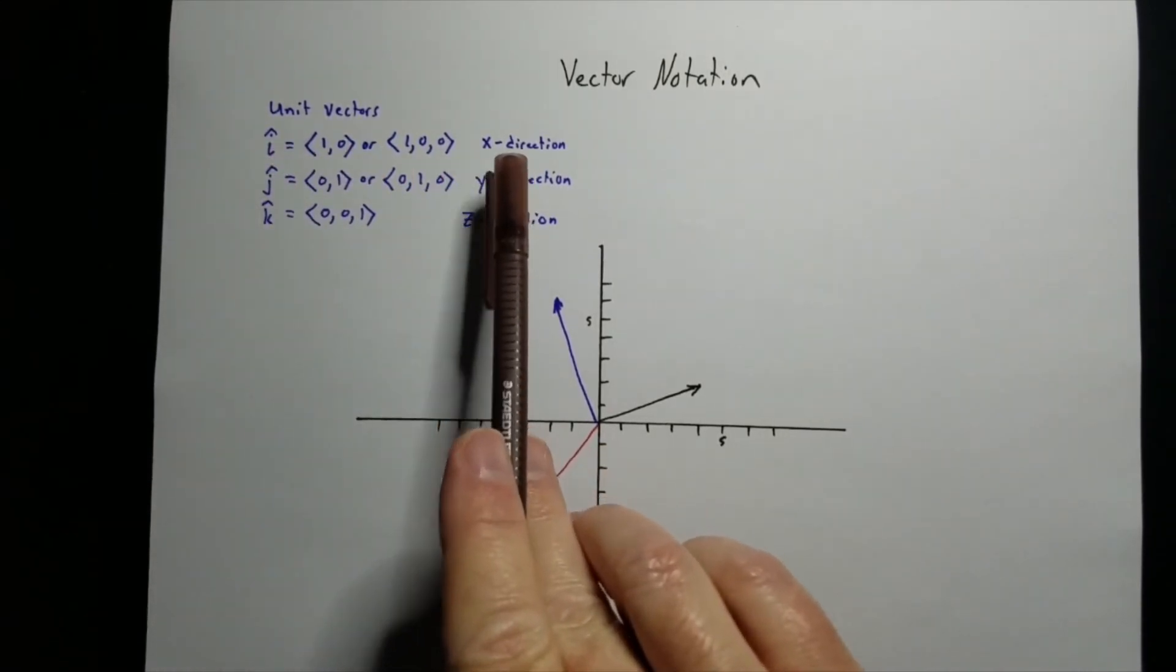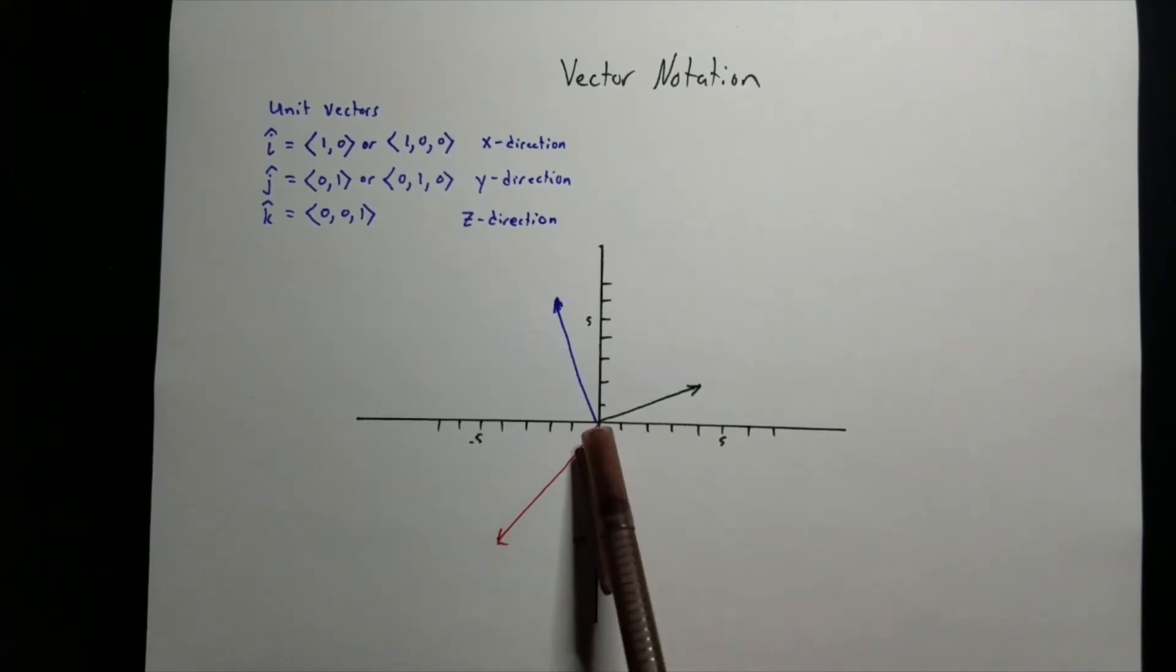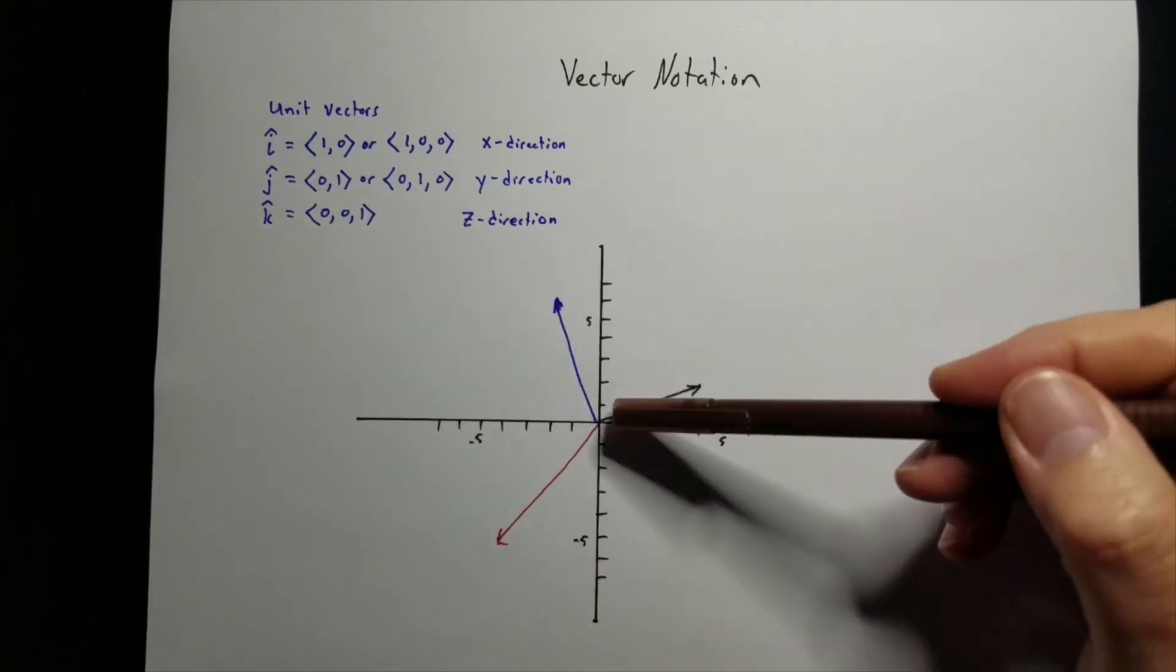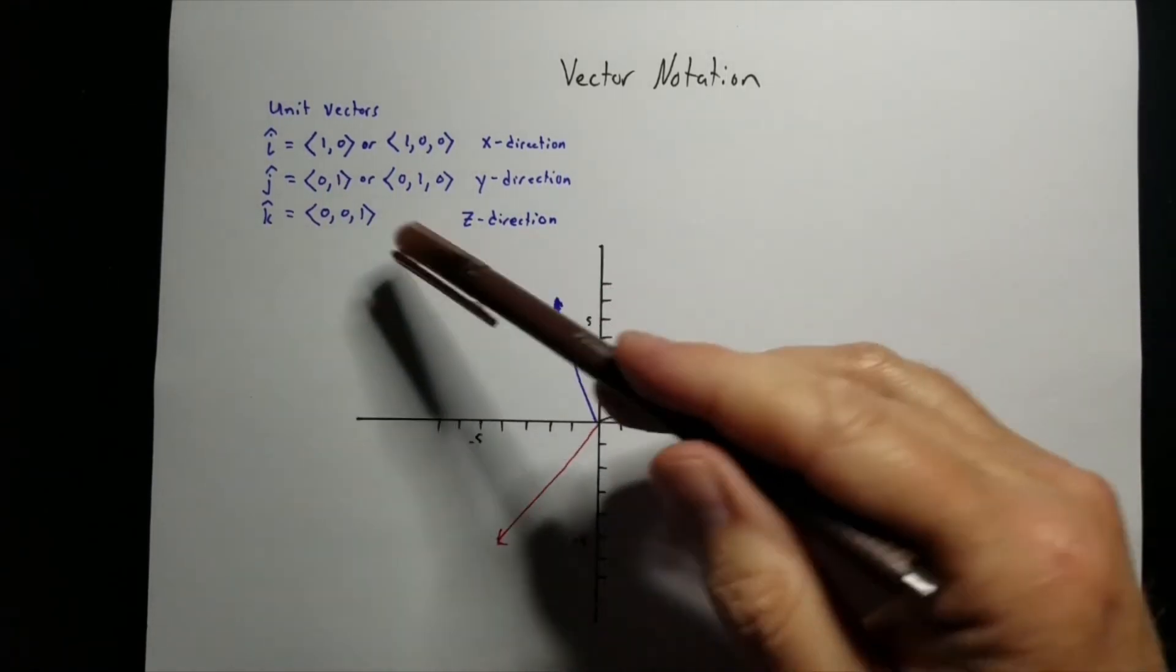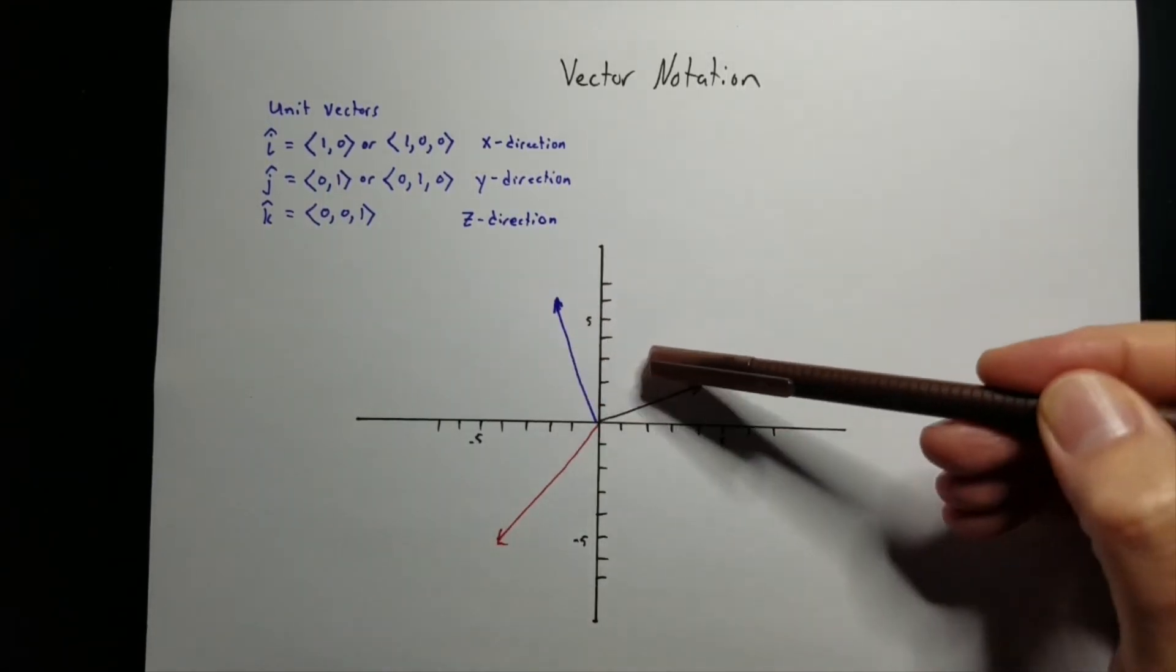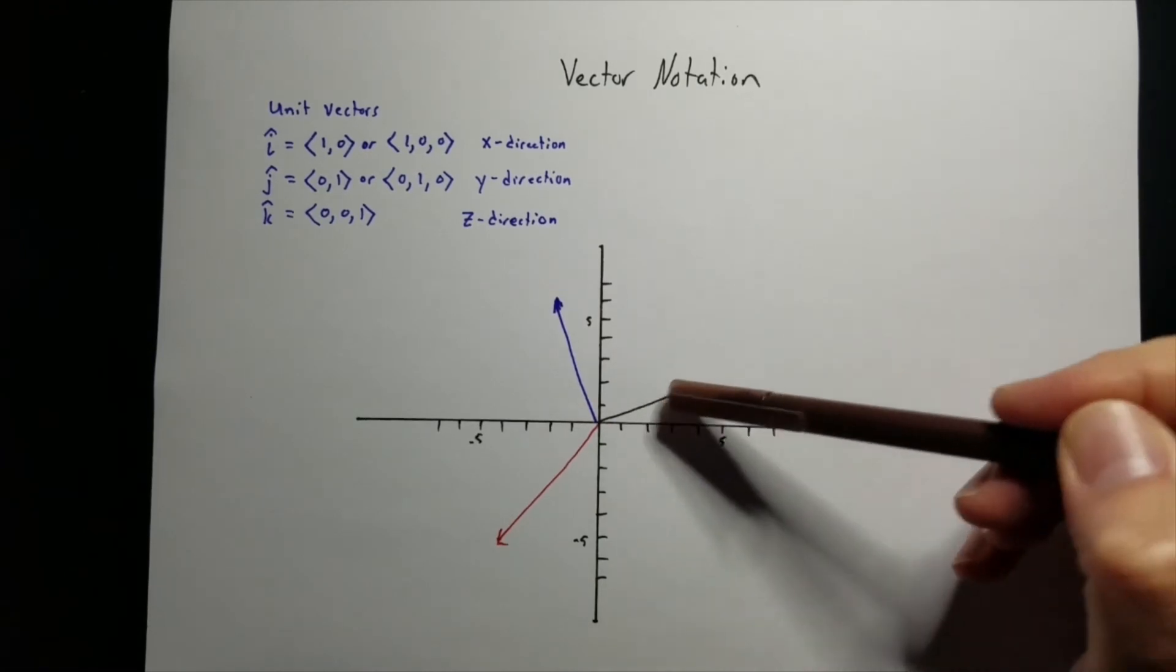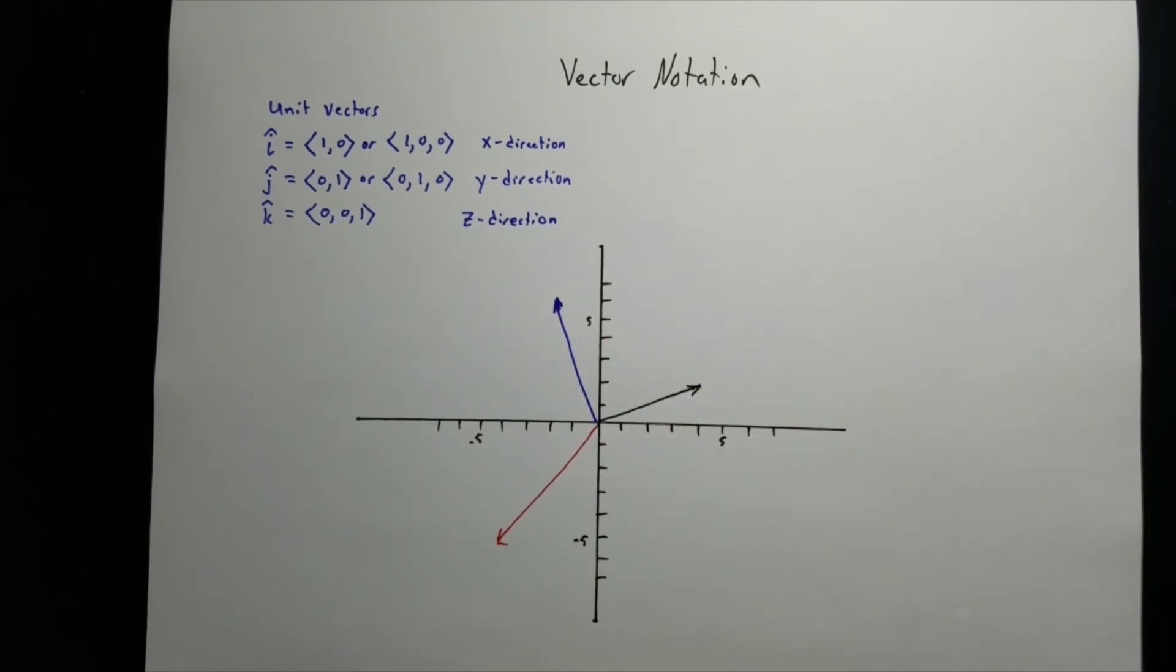i is really just in the x direction. Positive i, negative i. And it's just one unit. j is in the y. And k is in the z. So that would be coming out towards you. So if I've got these drawn right here, what would be their vector notation?